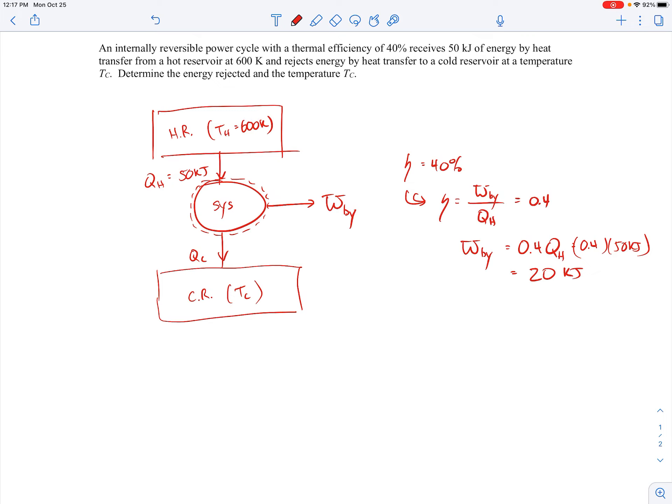So if I apply the first law to that system, assuming that we're operating over a cycle, let me just write this down. So this is all over a cycle. Since it's over a cycle, we know that the change in the total energy is going to be 0. There's no change in internal energy over the cycle, and then we're assuming there's no kinetic and potential energy changes.